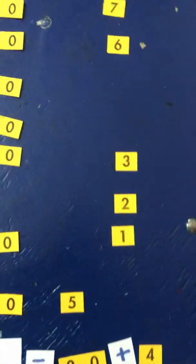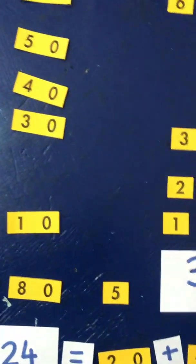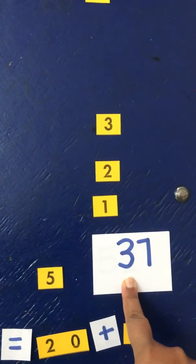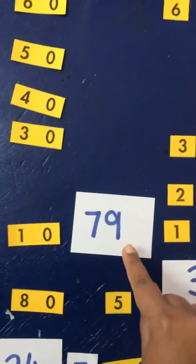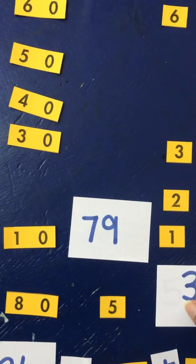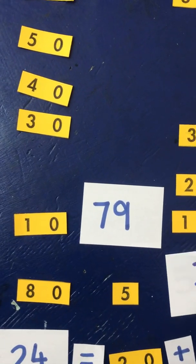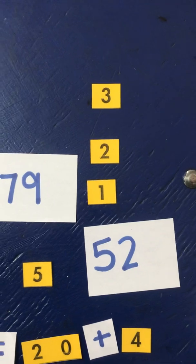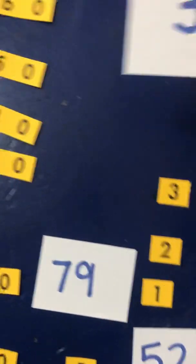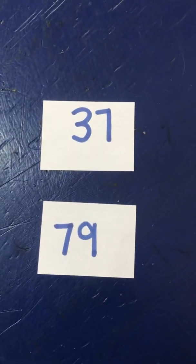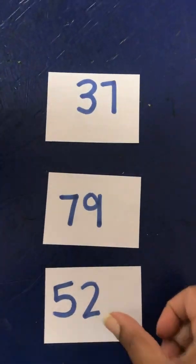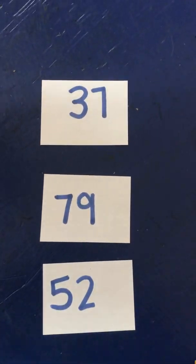I want you to make the number 37. And once you've made 37, make 79, 25, and you can also make the number 52. So you're going to make the number 37 using your cards, the number 79, and the number 52. Thank you, enjoy, bye.